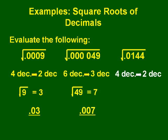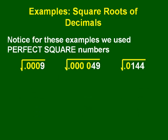For the last question, the square root of 0.0144: we have four decimal places, so our answer will have two decimal places. The square root of 144 is 12, so our answer is 0.12. Notice that for all these examples, we used perfect square numbers, and we also had an even number of decimal places.